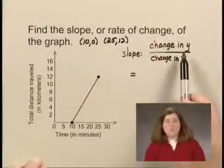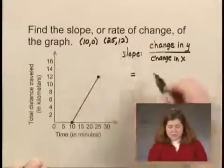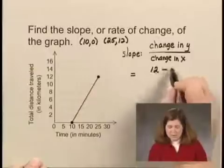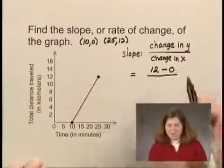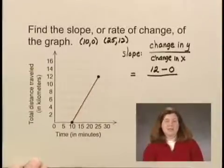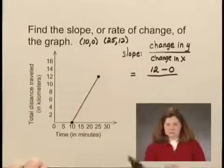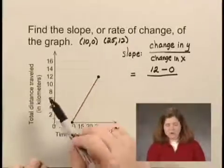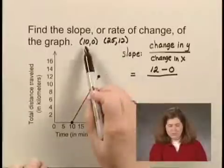The change in y I can find by subtracting 12 minus 0. That's subtracting the y coordinates. The change in x I can find by subtracting x coordinates in the same order in which I subtracted the y coordinates. So that would be 25 minus 10.